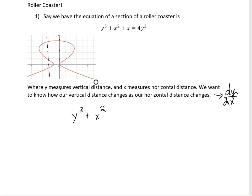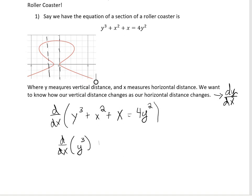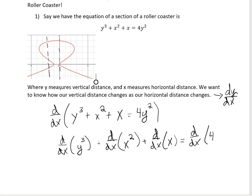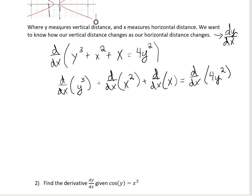Here's how we're going to do that. We look at the whole equation — y³ + x² + x = 4y² — and we are going to take the derivative with respect to x. We can take the derivative of each piece with respect to x: d/dx of y³, plus d/dx of x², plus d/dx of x, equals d/dx of 4y².